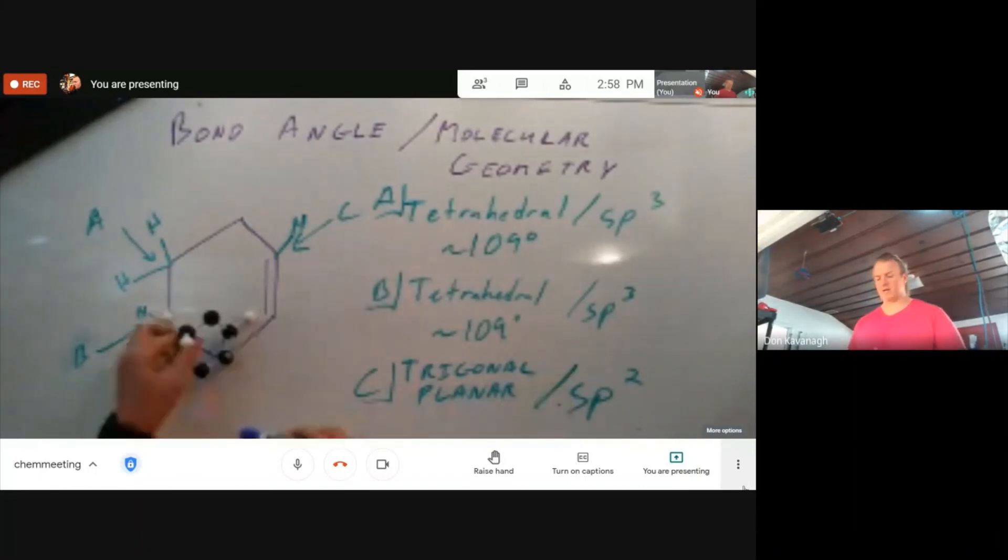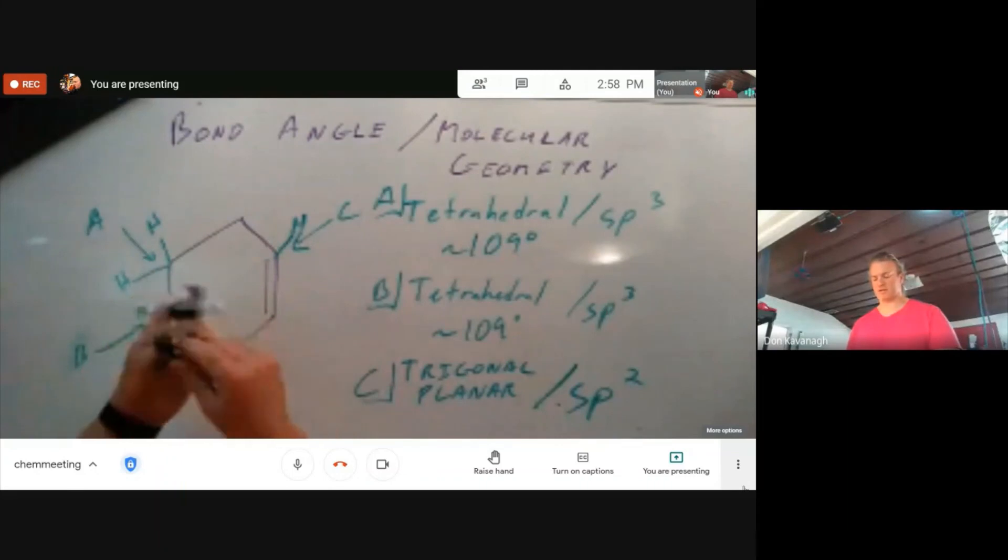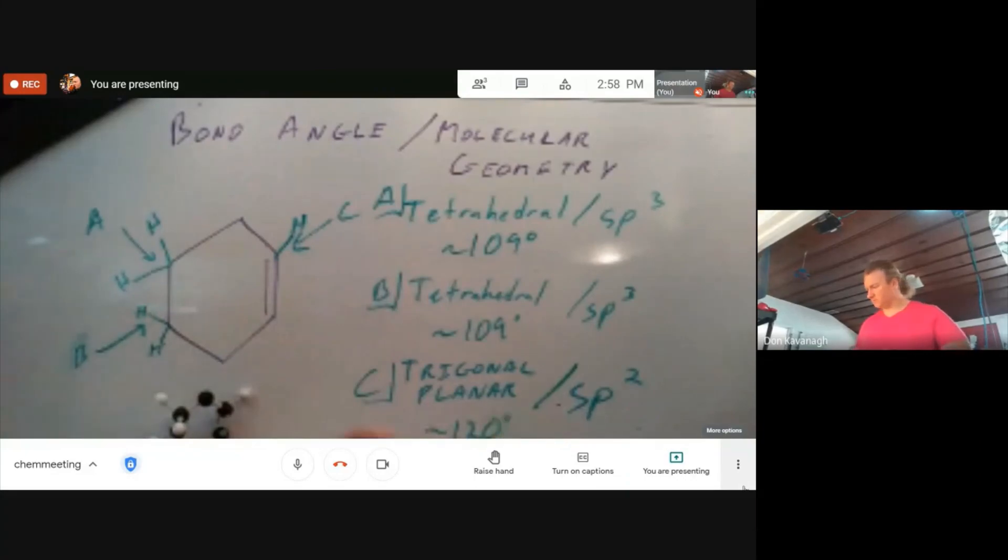On this model, you can see, just focusing on this carbon, that there are three things around it. It's a planar type geometry. When three things are around it, it's a planar type geometry. The bond angles are about 120 degrees.